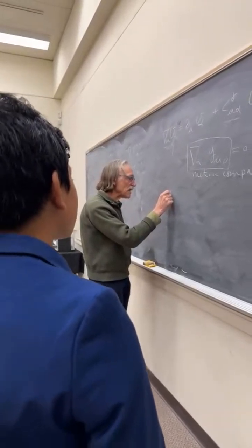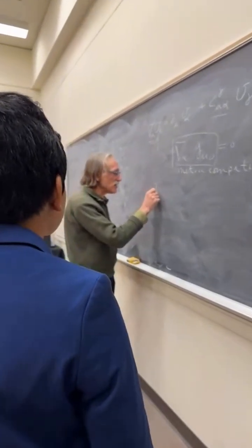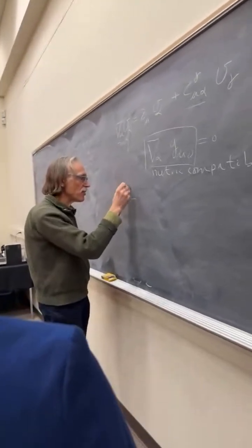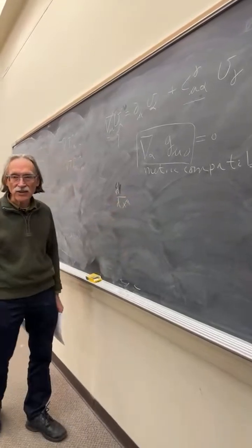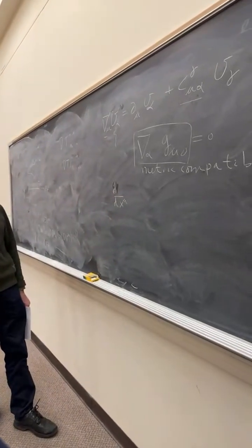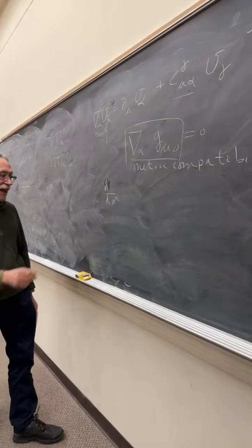And the basic vector is, let me write it like that, is dx mu. This is a vector. And then we need transformation properties.